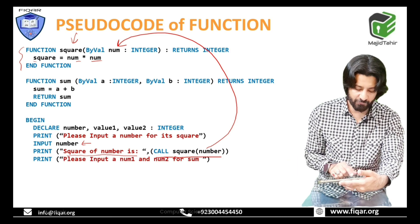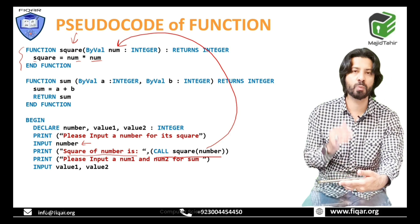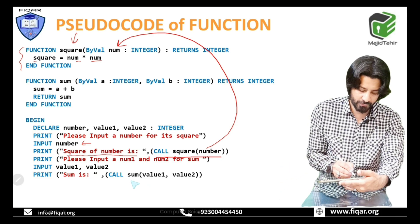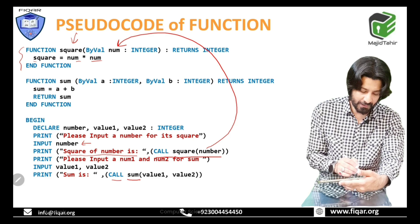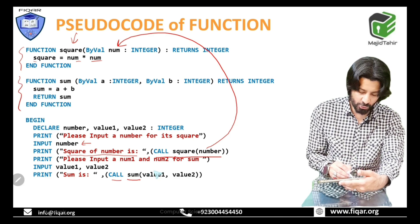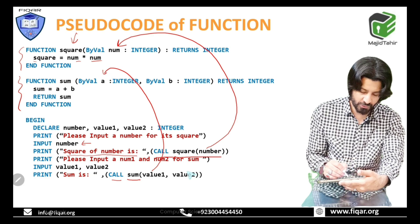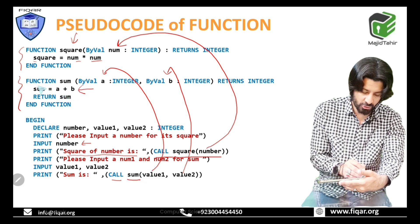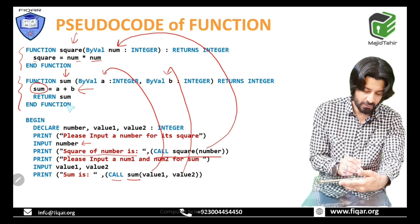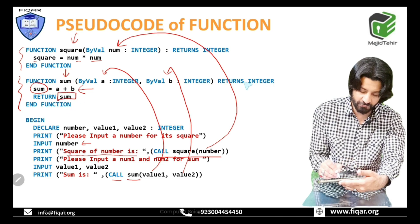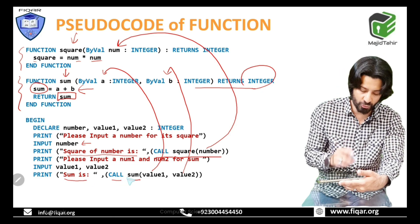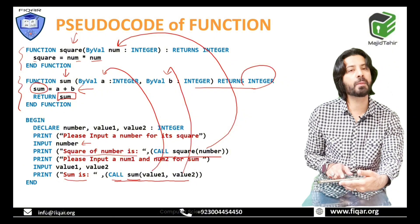Next, the program prompts 'please input number one and number two for sum'. The user inputs value1 and value2. Then 'sum is' is output, and a call to the 'sum' function is made with value1 and value2 as arguments. Value1 is passed to parameter a, value2 to b, and a plus b is computed. The result is stored in 'sum' — the function name — which returns an integer value, and it is displayed.